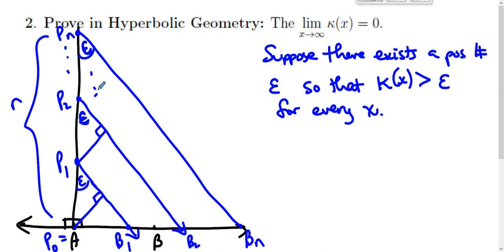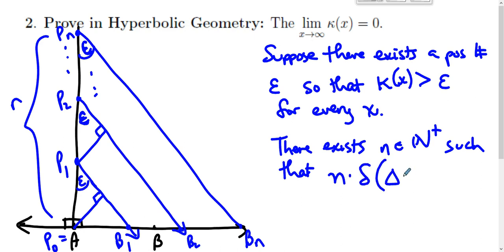There exists a positive integer n such that n times the defect of triangle P0, P1, Q1 is greater than 180. There exists such an n.